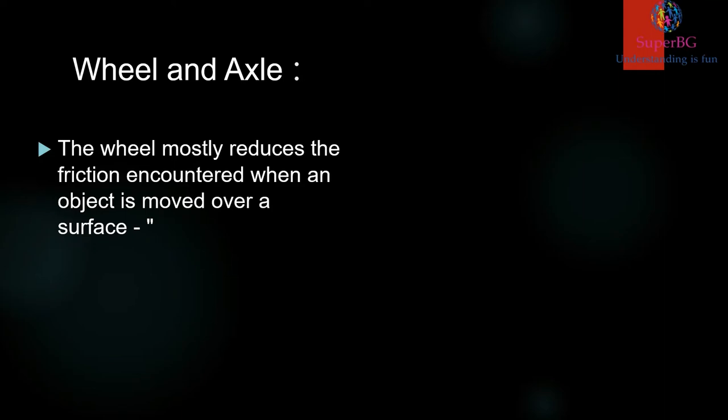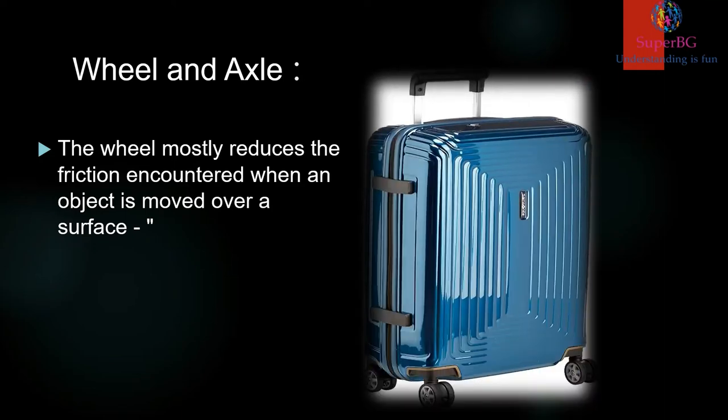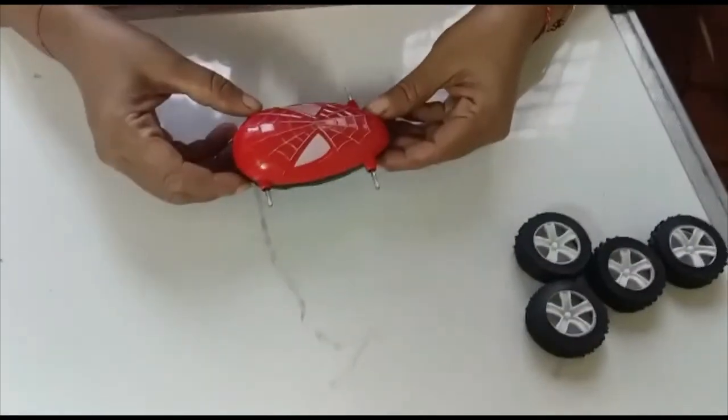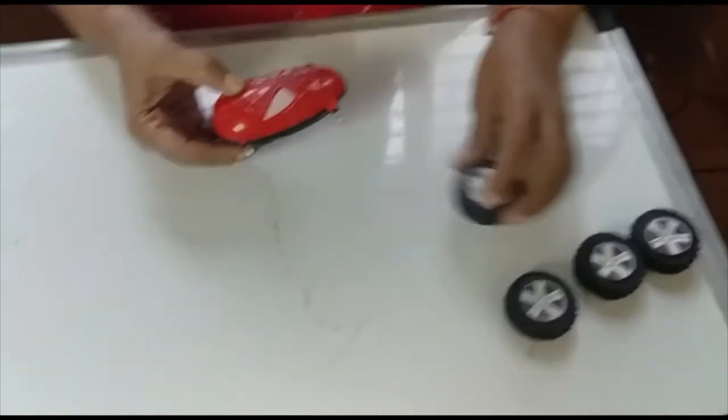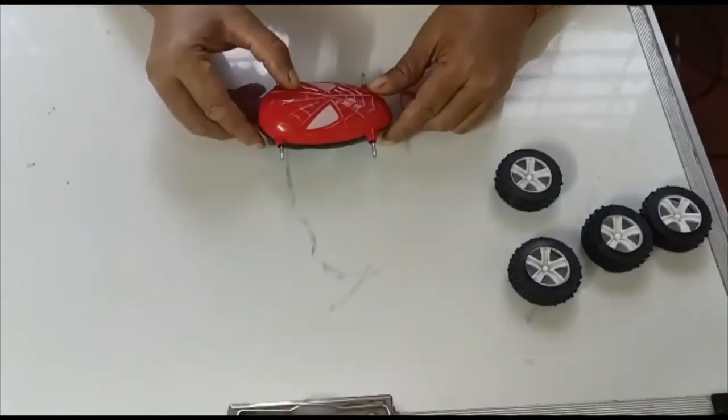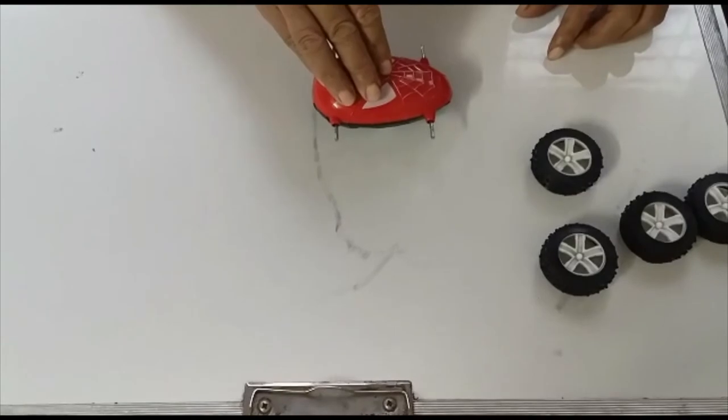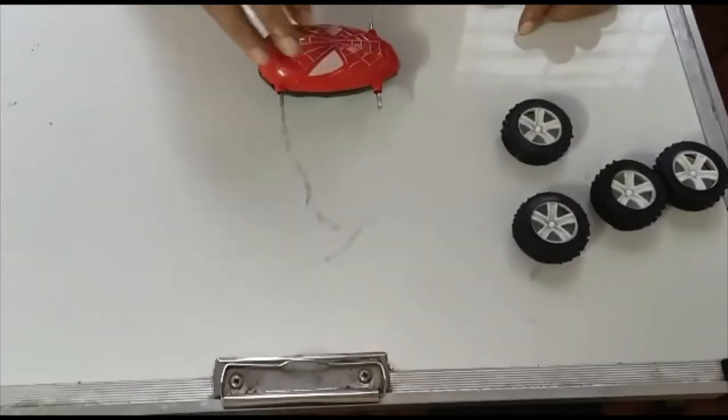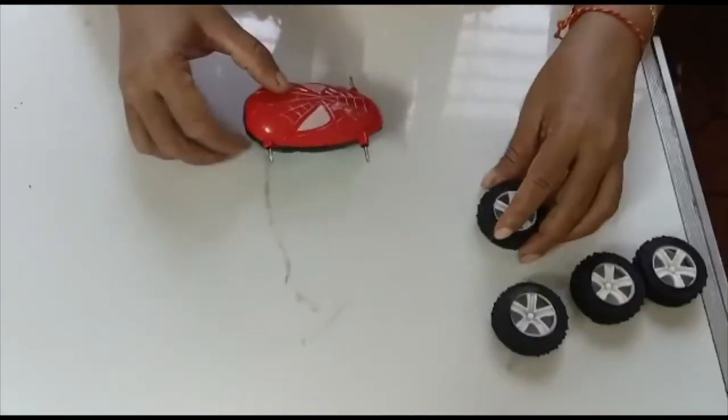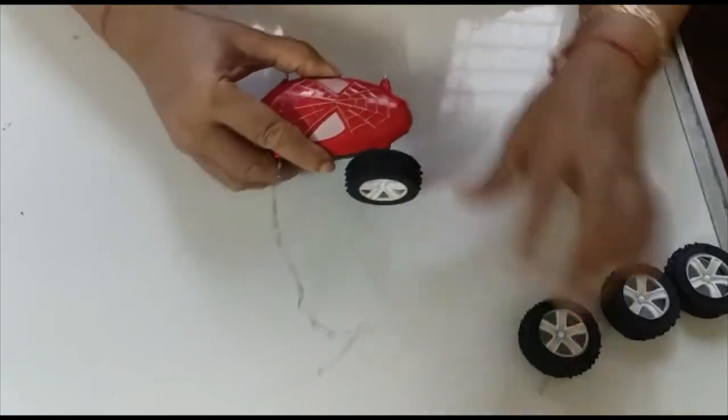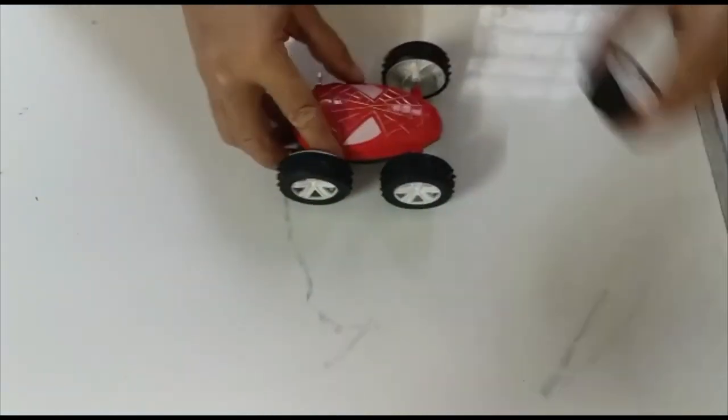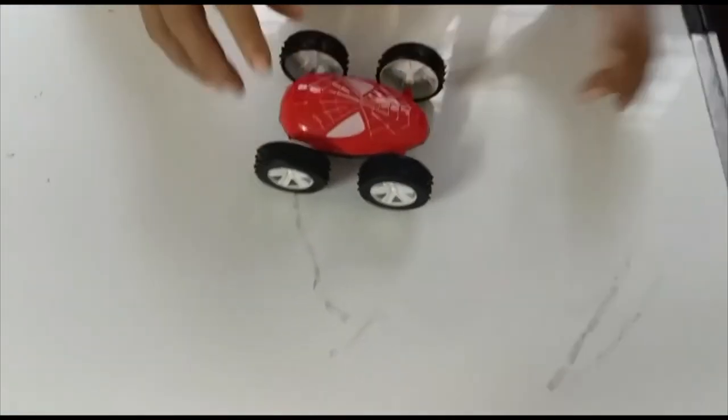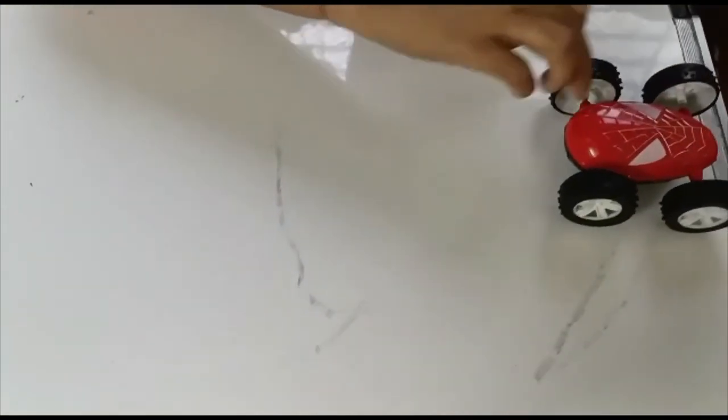The wheel mostly reduces the friction encountered when an object is moved. If you look at this object, this is the axle and this is the wheel. Now if you look at this object, this would happen without wheel and axle. Very difficult because the frictional force encountered makes it very difficult to slide. Now this object is with an axle and with a wheel. The frictional force gets reduced to a minimum. As a result it is very easier to slide. A wheel and axle reduces the frictional force.